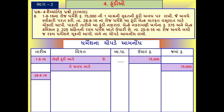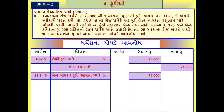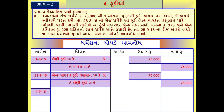છેવટે લેણી હૂંડી ખાતે જમા અને બેંક મારફત હૂંડી વસૂલાત ખાતે ઉધાર - ₹૭૫,૦૦૦. તે લેણી હૂંડી ખાતે જમા ₹૭૫,૦૦૦. તો જે બેંક મારફત હૂંડી વસૂલાત ખાતે જે રકમ ઉધાર કરેલ છે, તે રકમ આપણે જમા કરવાની રહેશે. અને નોંધ - નકારામણી ખર્ચ છે, તે નકારામણી ખર્ચ સહિત ની રકમ આપણે નોંધવાની રહેશે.